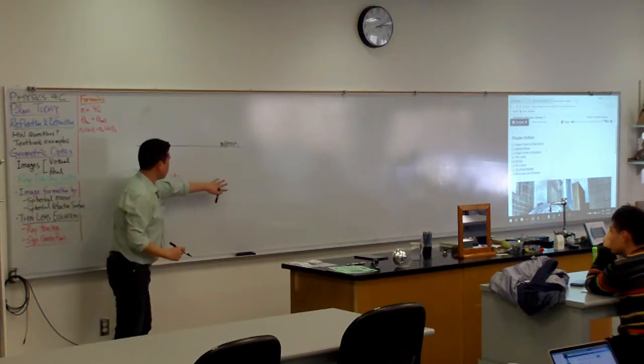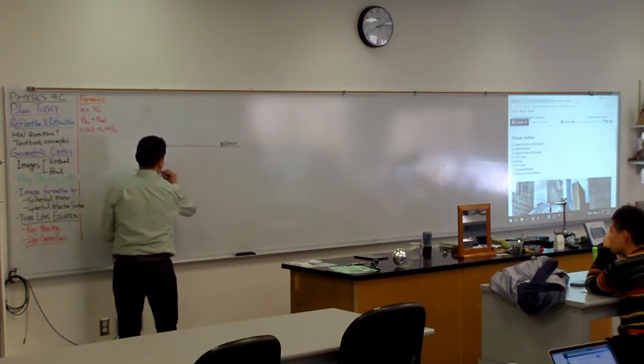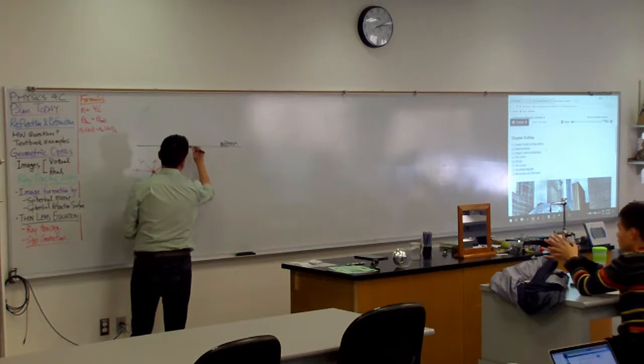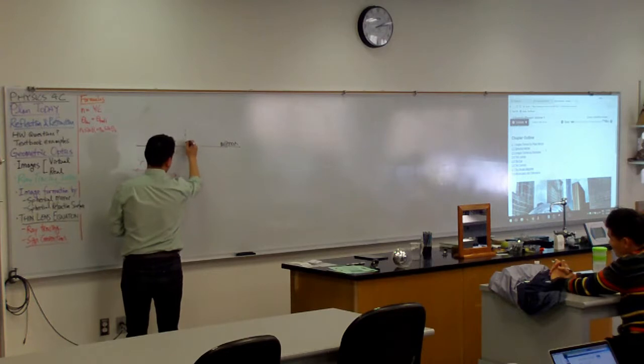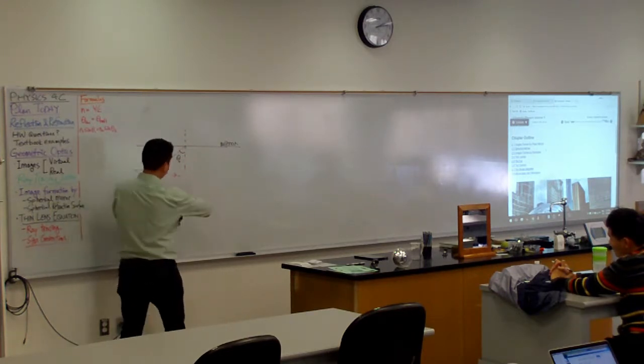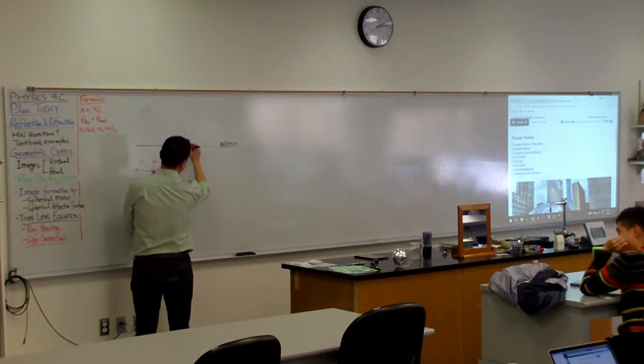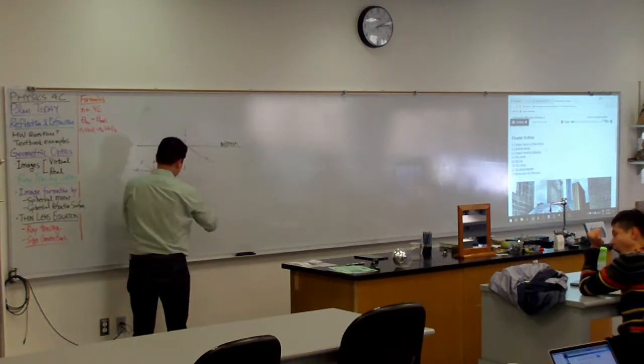And for a particular person here, this particular ray of light would hit off of the mirror and it undergoes reflection the way we were describing last week. So angle of incidence equal to angle of reflection.